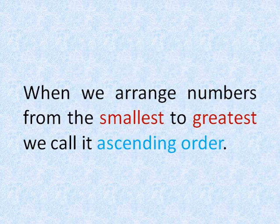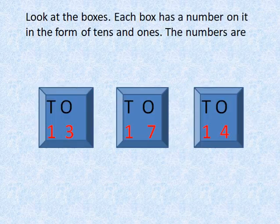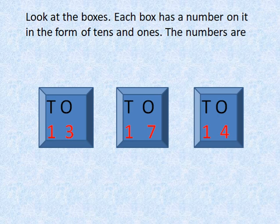When we arrange numbers from the smallest to greatest, we call it ascending order. Look at the boxes. Each box has a number on it in the form of tens and ones and the numbers are 13, 17 and 14.